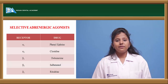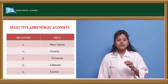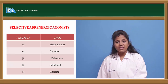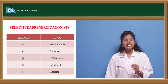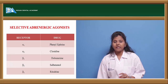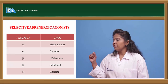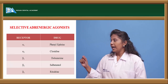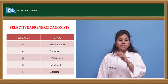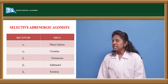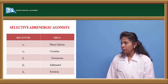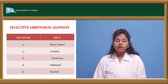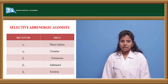Selective adrenoreceptor agonists bind to only a particular receptor type. For example, phenylephrine is a selective alpha-1 agonist; clonidine is a selective alpha-2 agonist; dobutamine is a selective beta-1 agonist; salbutamol is a selective beta-2 agonist; and ritodrine is also a selective beta-2 agonist.